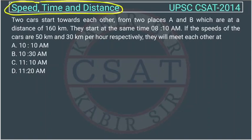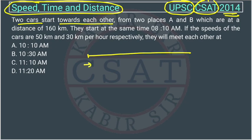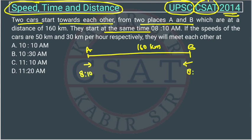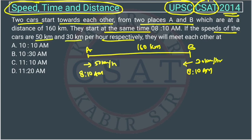This question is from the Speed, Time, and Distance chapter, asked by UPSC in their CSAT paper of 2014. Two cars start towards each other from two places A and B, which are at a distance of 160 km. Both cars start at the same time — one at a speed of 50 km/h and the other at 30 km/h.